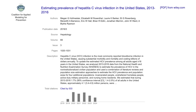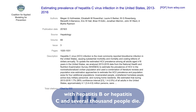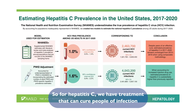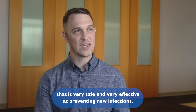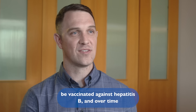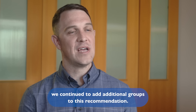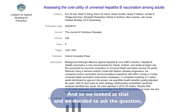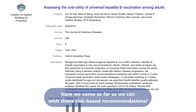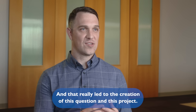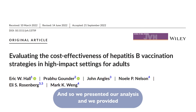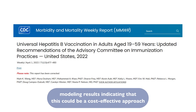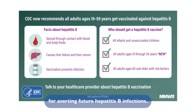Here in the United States, hepatitis B and hepatitis C are quite common infections. Every year tens of thousands of people are infected and several thousand people die. For hepatitis C we have treatment that can cure people of infection, and for hepatitis B we have a vaccine that is very safe and very effective at preventing new infections. The recommendation in 1991 was that newborn infants be vaccinated against hepatitis B, and over time additional groups were added. We asked whether we had come as far as we can with risk-based recommendations, and that led to developing a model to help answer that question. We presented our analysis with modeling results indicating this could be a cost-effective approach for averting future hepatitis B infections.